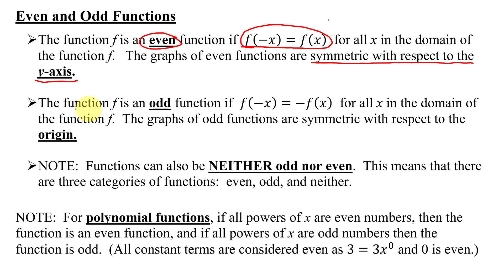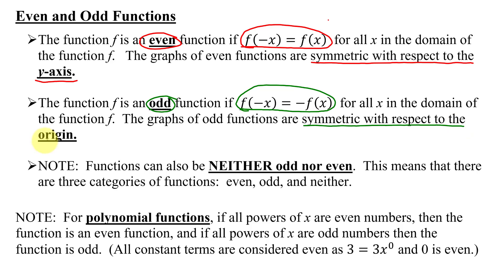The function f is an odd function if f of negative x equals negative f of x for all x in the domain of the function f. The graphs of odd functions are symmetric with respect to the origin. But don't forget, functions can also be neither odd nor even.